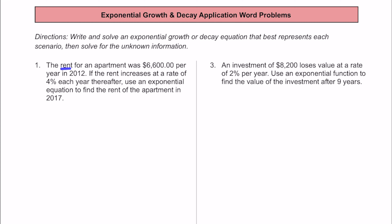For number one, we know that the rent for a particular apartment is going to be $6,600 per year, and that's in the year 2012. If the rent is going to increase at a rate of 4% each year thereafter, we're going to use an exponential equation to figure out the cost of the rent in 2017.